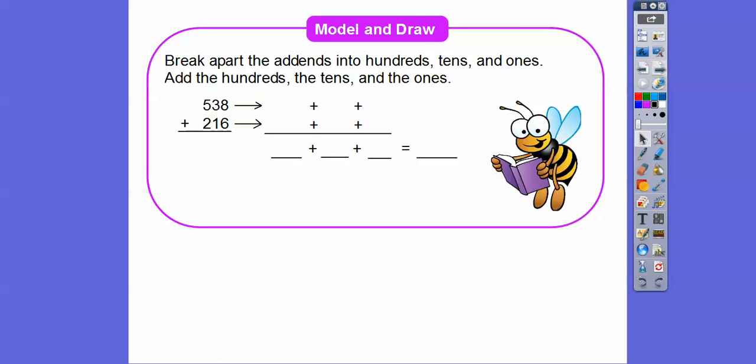So let's break apart the addends into hundreds, tens, and ones. Add the hundreds, the tens, and then the ones. So let's go ahead and do the hundreds first. So here we have 500 and 200. So I'm going to write 500 and 200 right there. Let's do the tens next. So I'll highlight this in red. There's three tens and one tens. So 30 and 10 for the tens right there. And then there's eight ones and six ones right there.